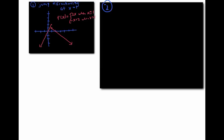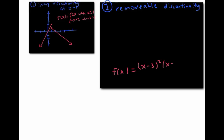Another common kind of discontinuity is called a removable discontinuity. You may have encountered these before when you learned about rational functions with holes in them. For example, the function f(x) equals (x minus 3) squared times (x minus 4), divided by (x minus 4), which has a hole when x equals four, and otherwise looks like the graph of (x minus 3) squared.